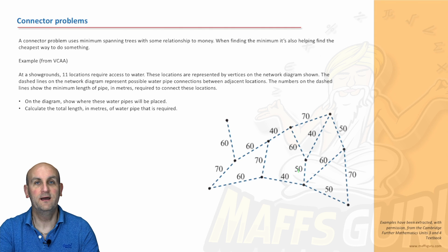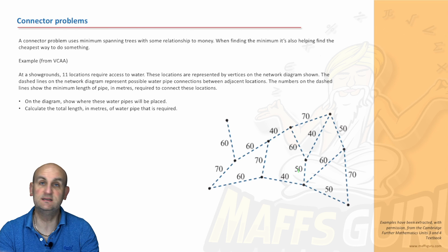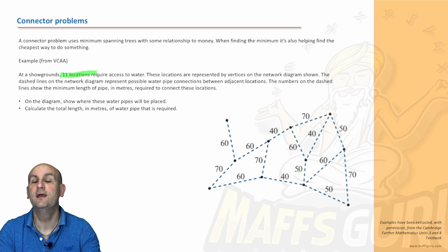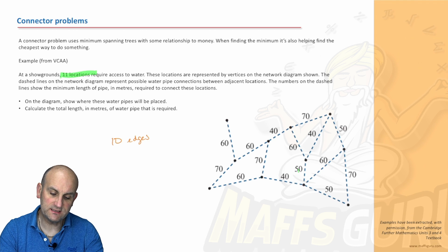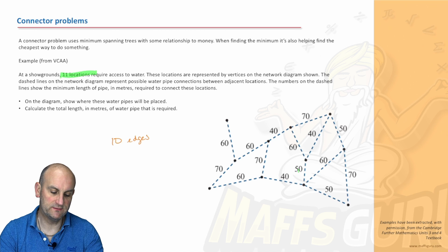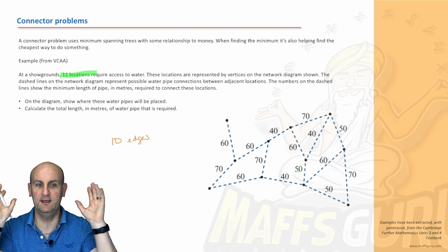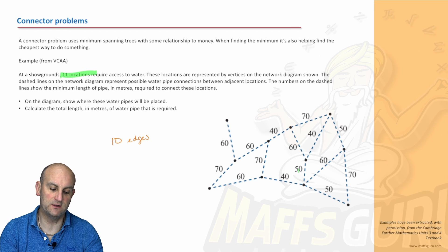A connector problem is essentially the same idea applied to a real-world network. It uses minimum spanning trees in relation to money — finding the cheapest way to do something. Here's an example: at a showground with 11 locations that have access to water, the locations are represented by vertices. The dashed lines show possible water pipe connections, and the numbers show the minimum pipe length in metres required. The question asks us to show where pipes would be placed — that's code for 'do a minimum spanning tree' — and calculate the total length.